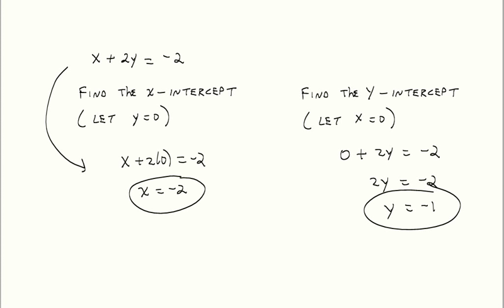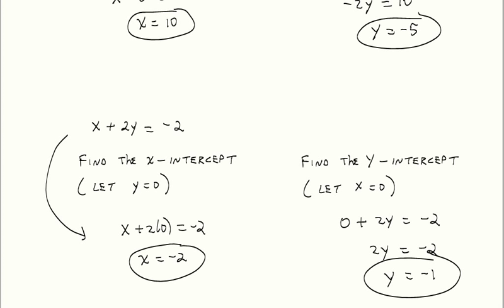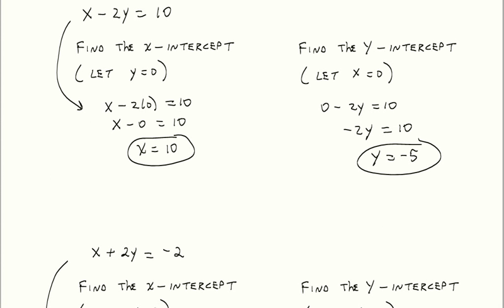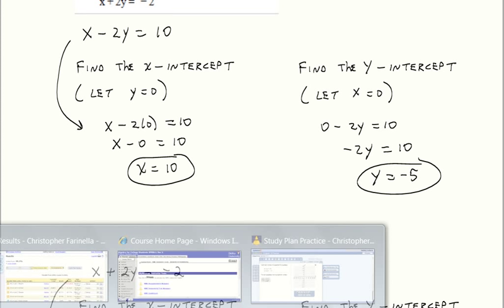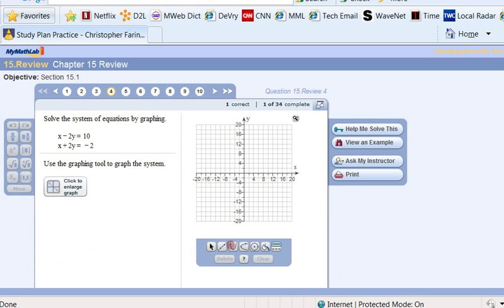So what we have is an x-intercept of negative 2 and a y-intercept of negative 1 for that second equation. And for the first equation, what we have is x equals 10 and y equals negative 5. All right.